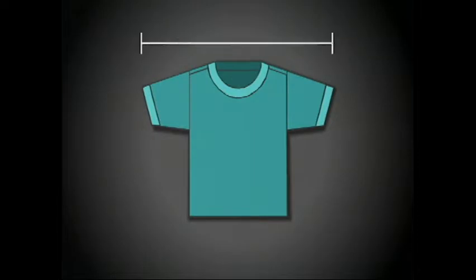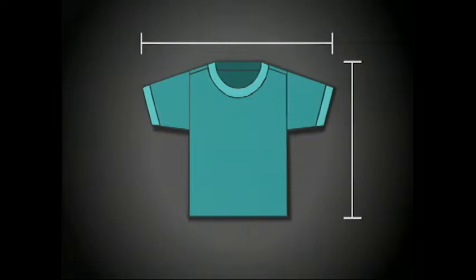Dimensional stability is defined as the resistance to change in the length and width dimensions of a fabric or garment. Dimensional change is the measurement of the change in length and width of a product. The change is usually expressed as a percentage of the initial dimension of the specimen.